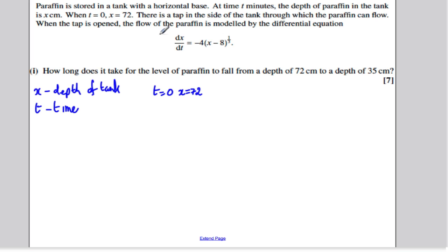There is a tap on the side of the tank through which paraffin can flow. The tap is open and the flow of paraffin is modeled by the following differential equation. That's telling us that the depth of the tank is decreasing at the following variable rate. It asks us how long does it take for the paraffin to fall from a depth of 72 to a depth of 35 centimeters.